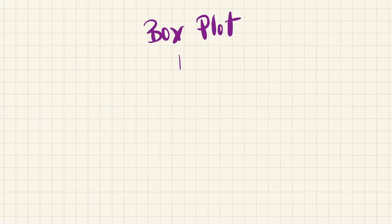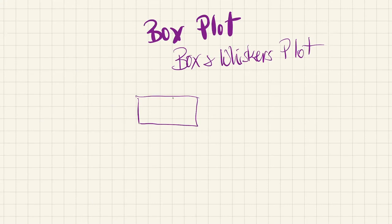I have also seen this called a box and whiskers plot. And you will see that when you see these, there's almost always, or there is always a box with a line in it. And then there's always a line from the front of it and the back of it.